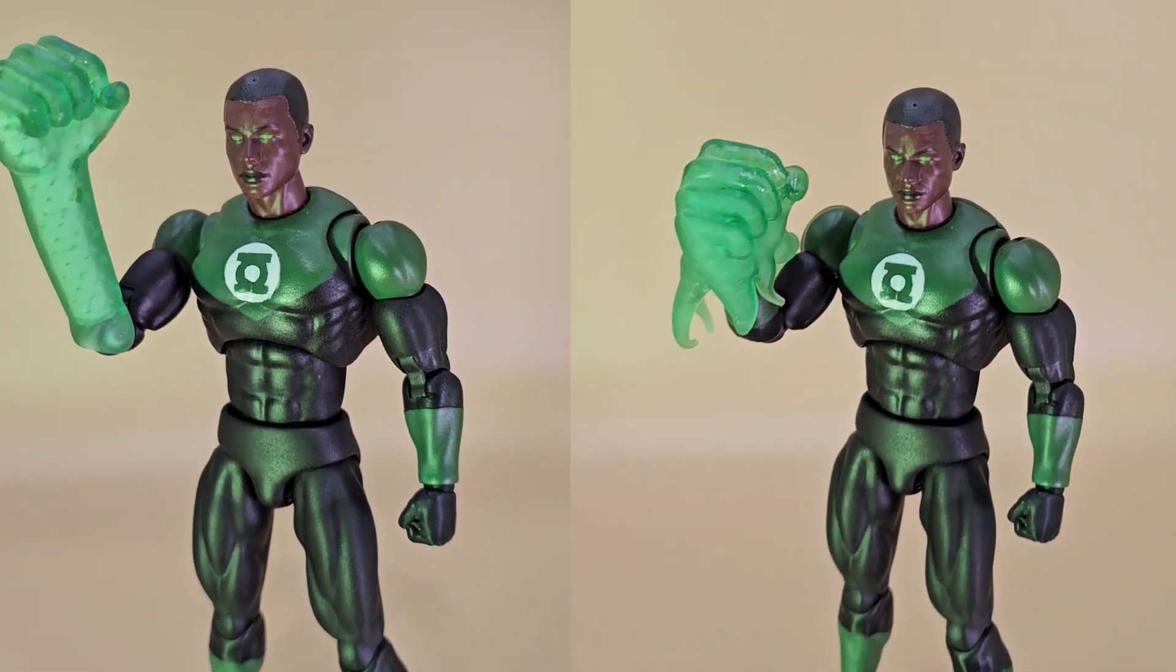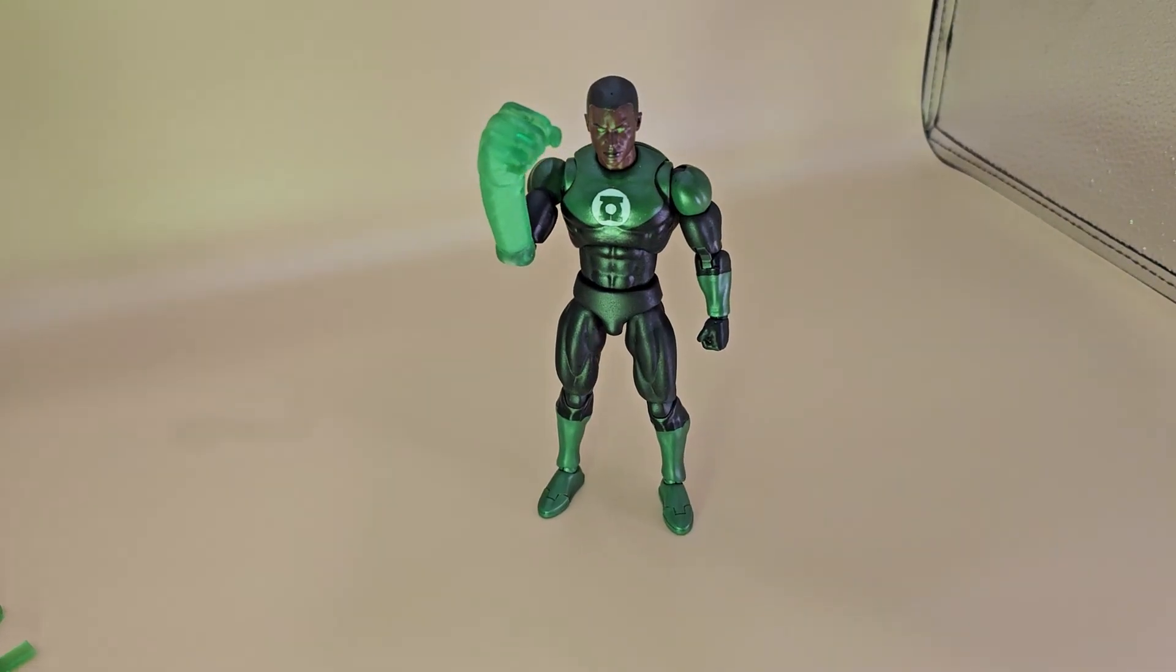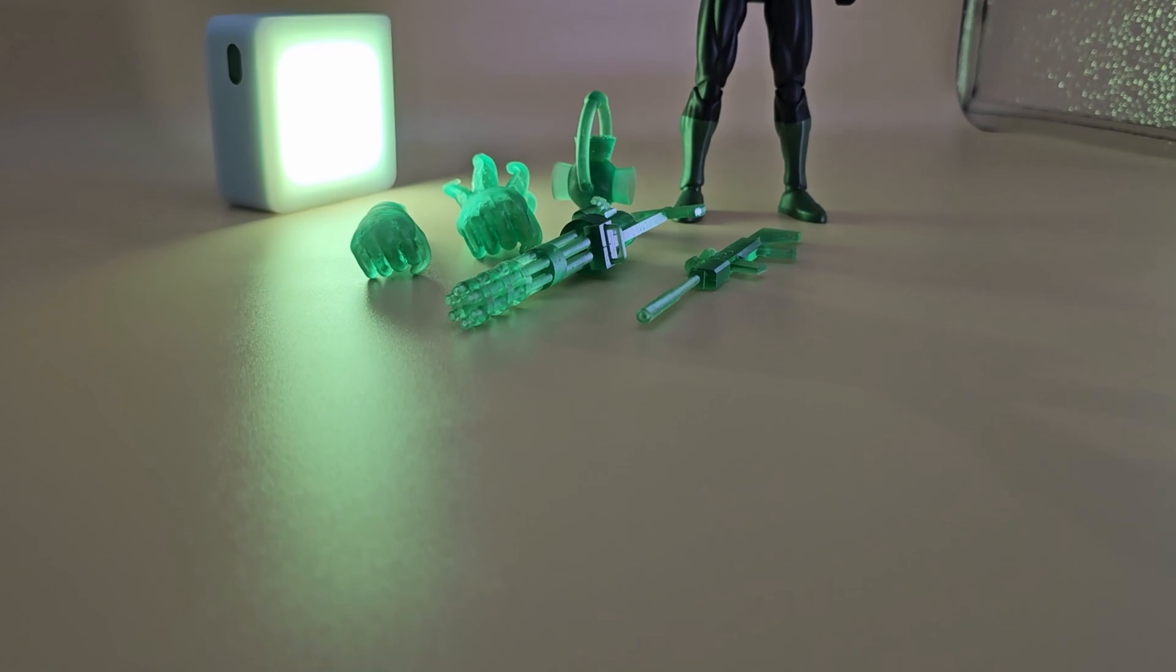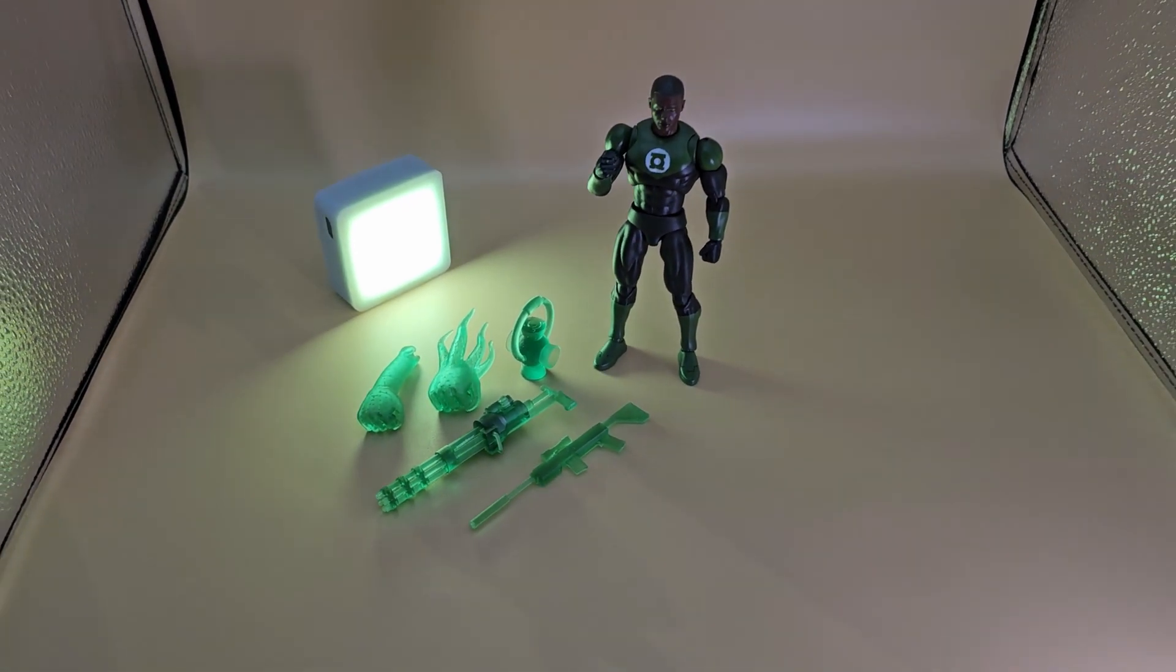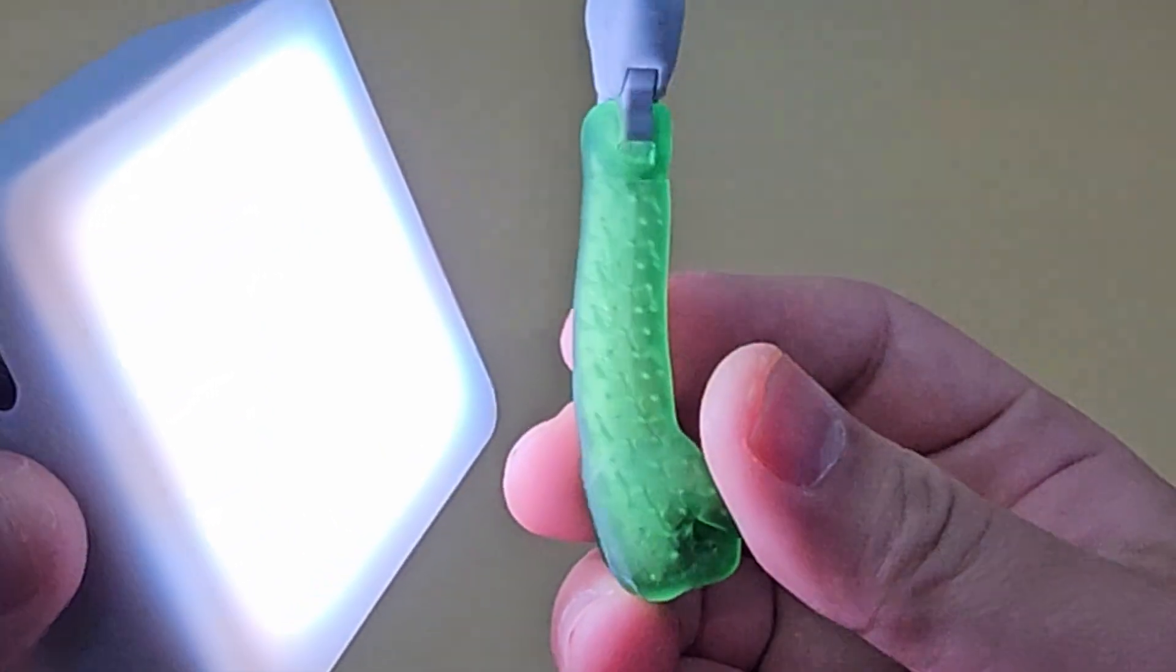The accessories that connect to the figure as articulating pieces work really well. Since the ABS-like 3.0 is flexible when heated, the resin could easily be used as swap parts. The fist construct works really well and looks absolutely stunning, although I could have placed the supports in the figure slightly better to minimize the visible supports within the body of the part.